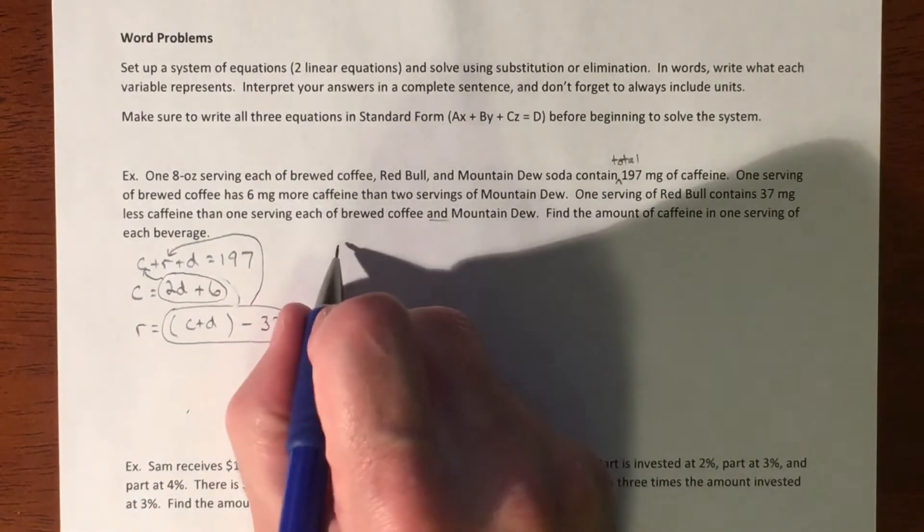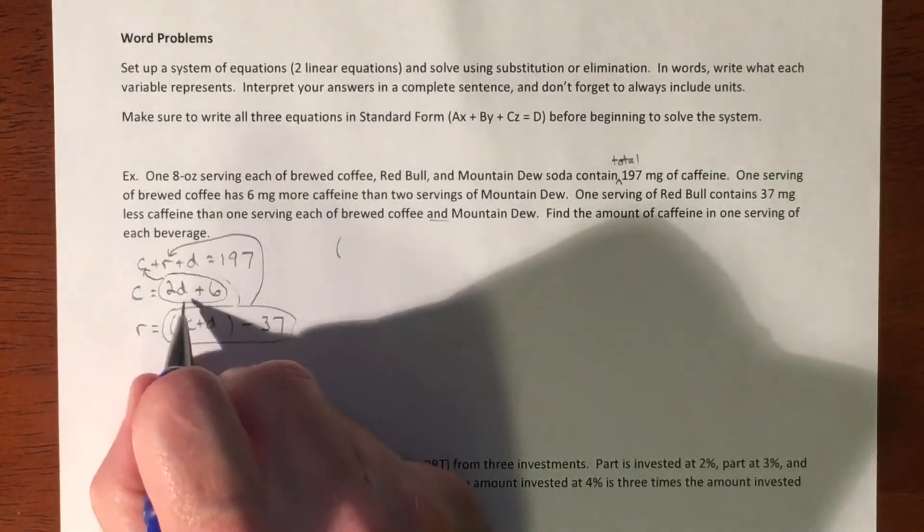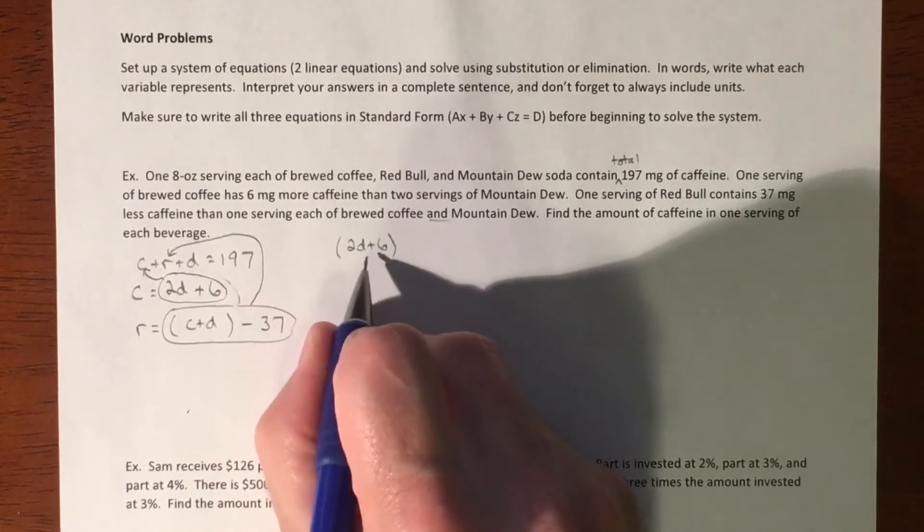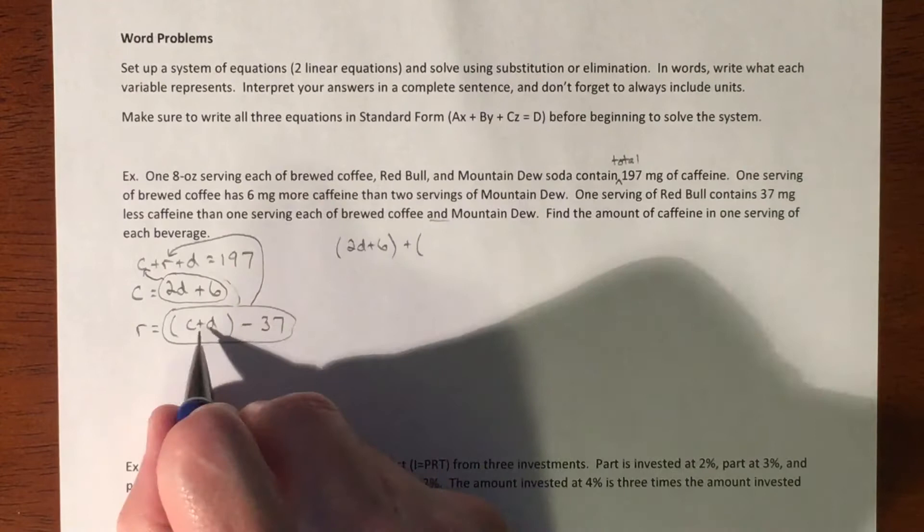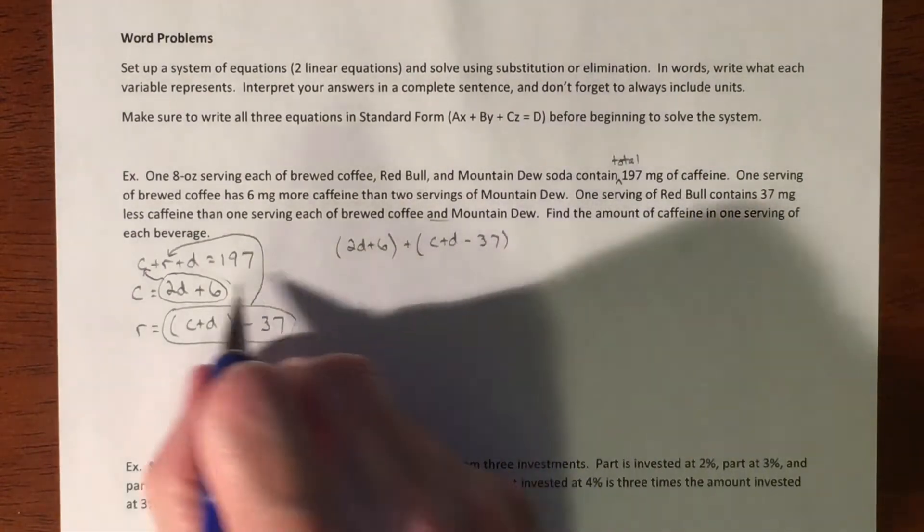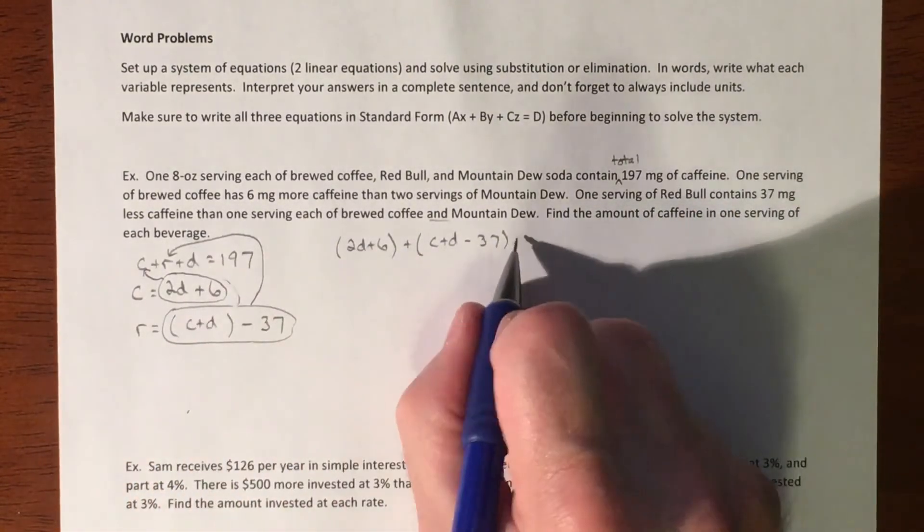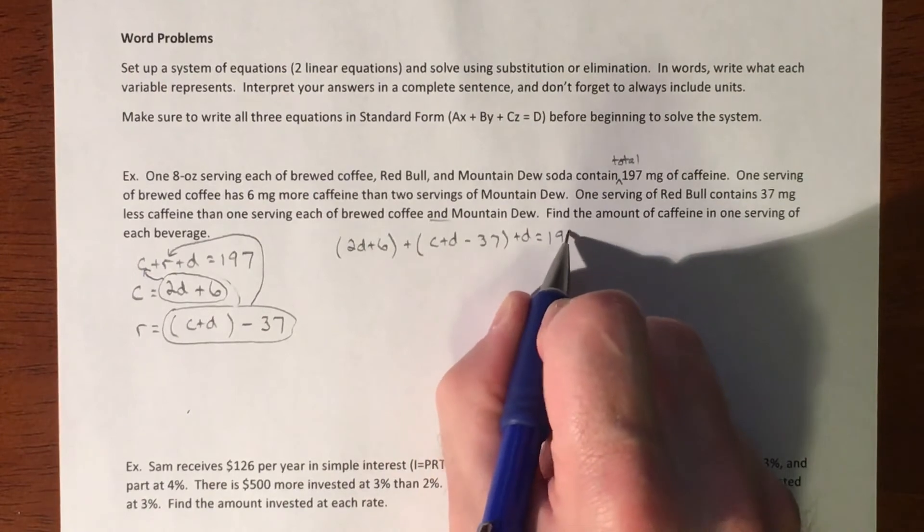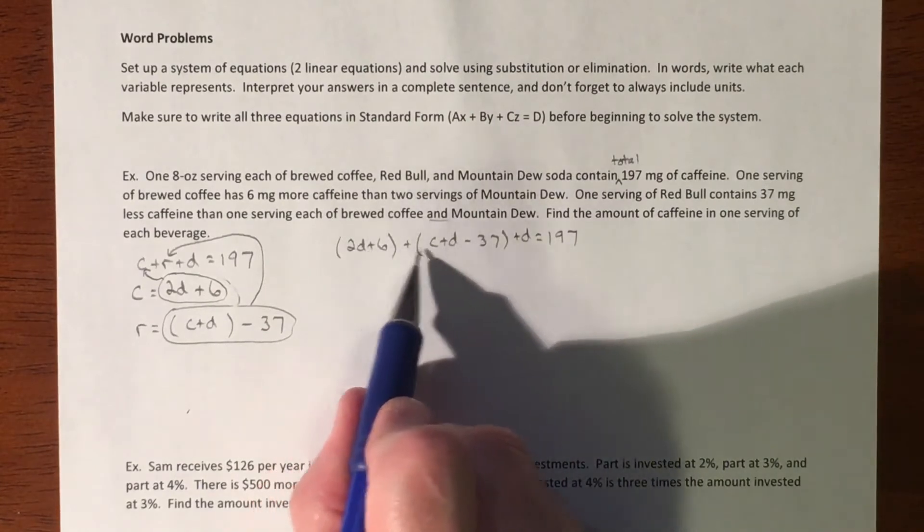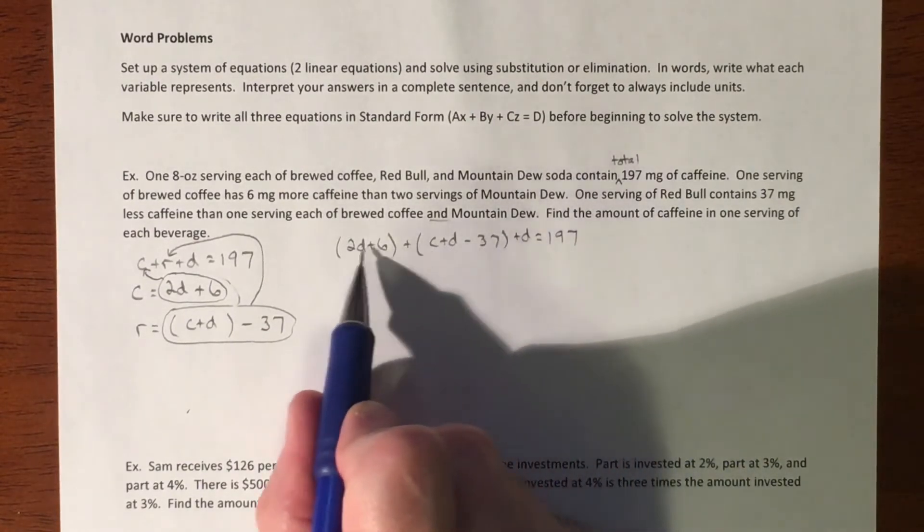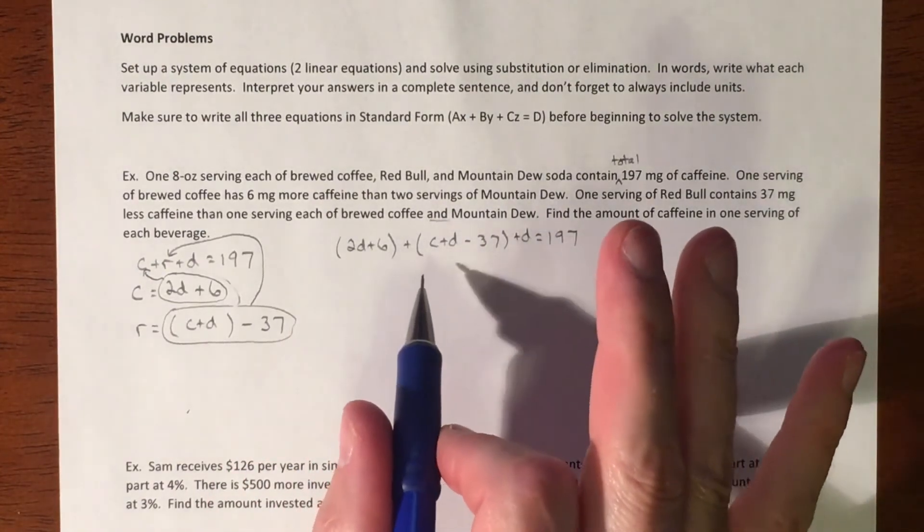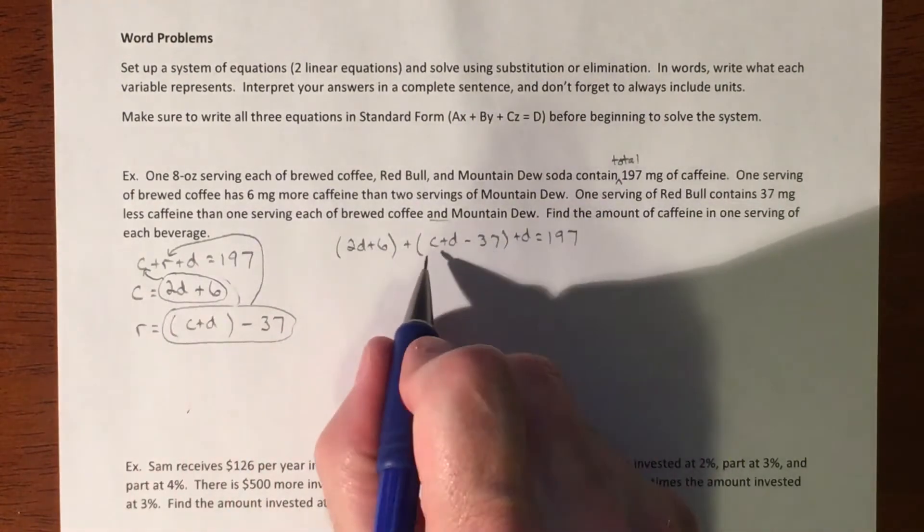So what that makes my equation look like is my C got replaced with 2D, 2D plus six. So that was C plus what was R is C plus D minus 37 and then plus D equals 197. Now we're close to being in a good spot because right now we're sitting with two different variables. We have C's and D's in here.